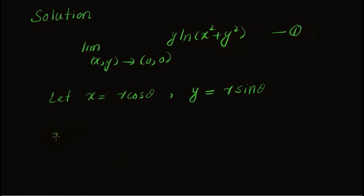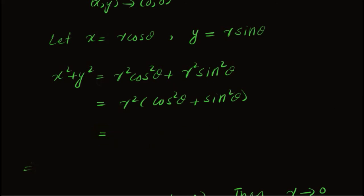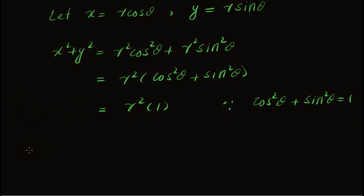We need x squared plus y squared. So, x squared plus y squared equals r squared cos squared theta plus r squared sin squared theta, which equals r squared times (cos squared theta plus sin squared theta). Since cos squared theta plus sin squared theta equals 1, this gives us x squared plus y squared equals r squared.